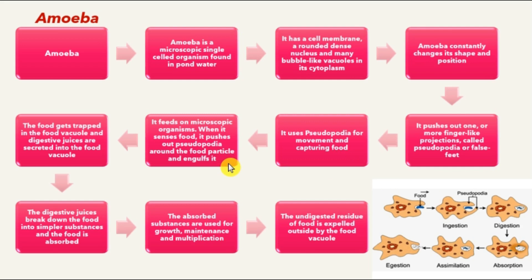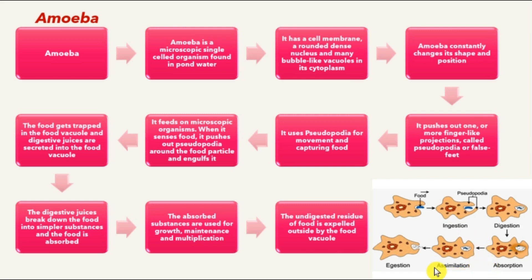Amoeba feeds on microscopic organisms. When it senses food, it pushes pseudopodia around the food particle and engulfs it. The food is trapped in a food vacuole, where digestive juices are secreted — similar to salivary glands secreting saliva in humans. The digestive juices break down the food into simpler substances, and the food is absorbed. The absorbed nutrients are used for growth, maintenance, and multiplication. The undigested residue is expelled outside by the food vacuole.